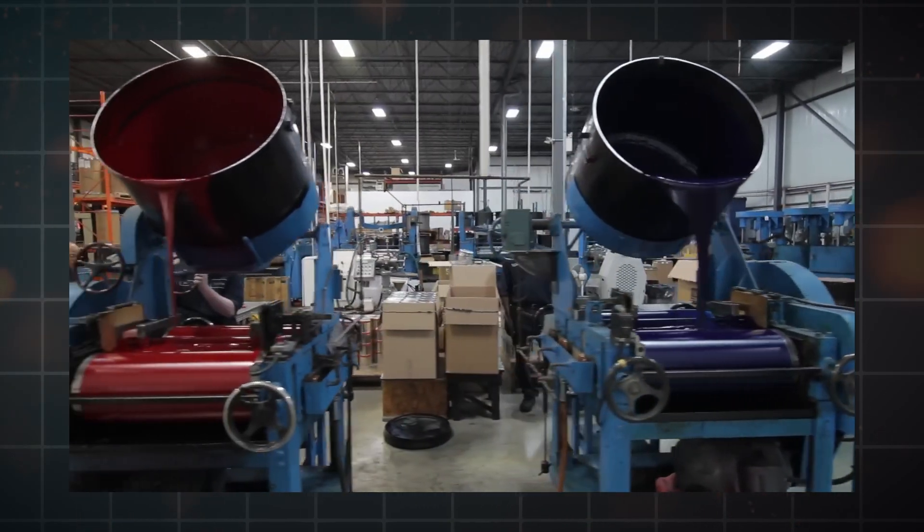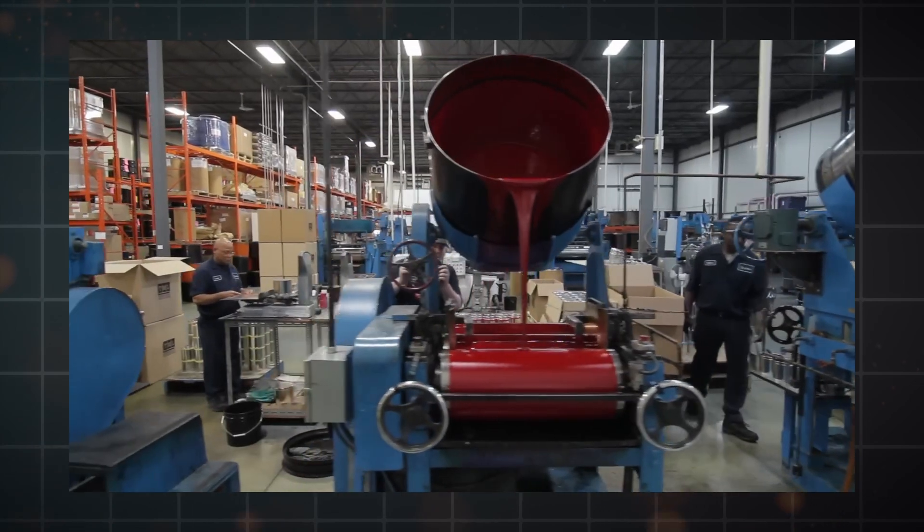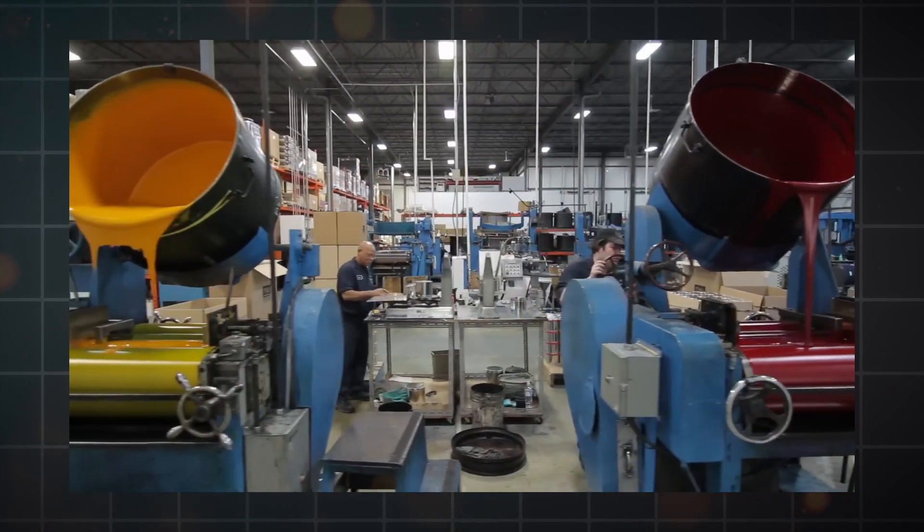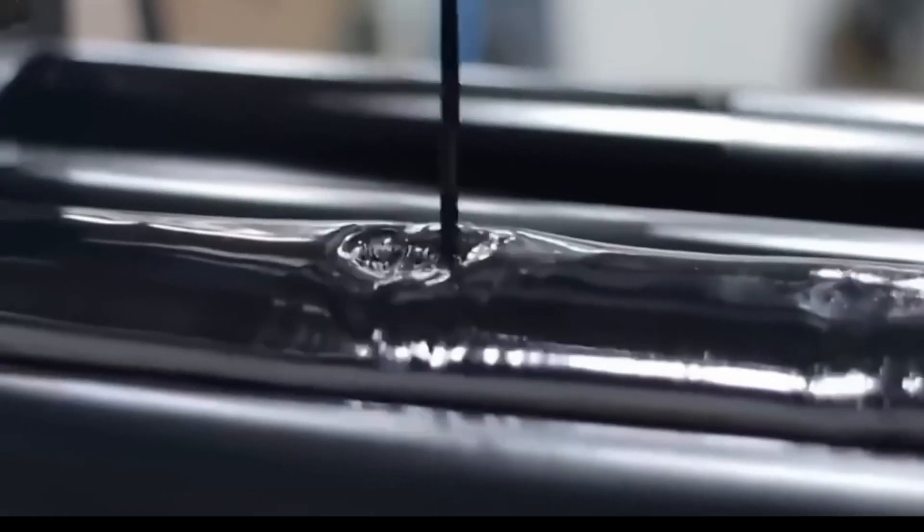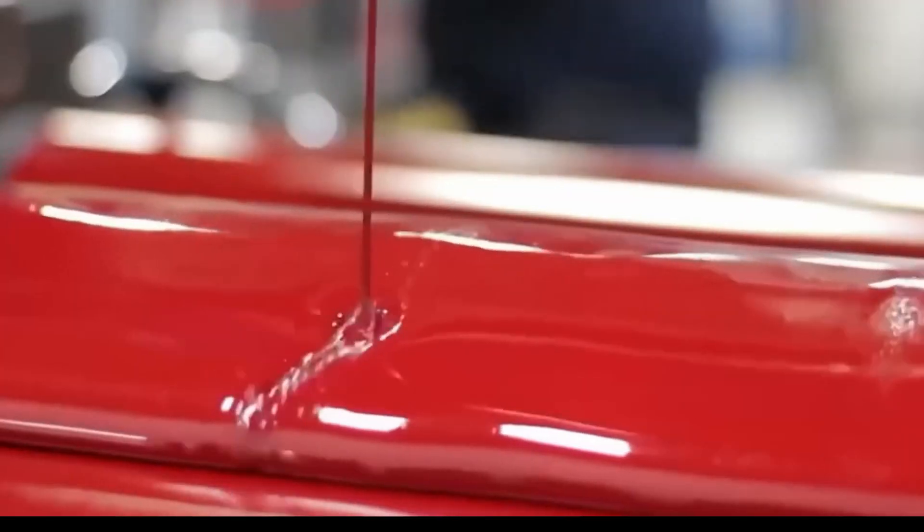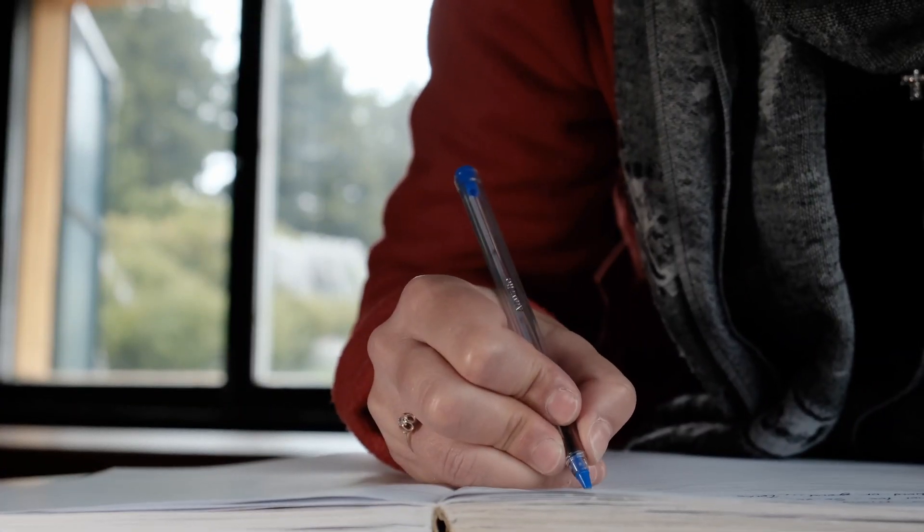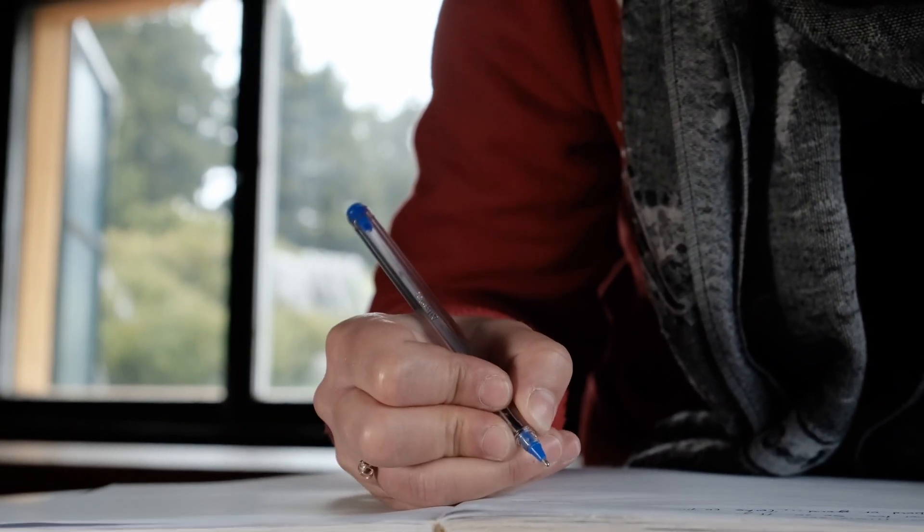In order to make the perfect ink, people mix different color dyes with special liquids that help the ink move easily, as well as some secret ingredients that make sure everything works just right. These things make sure that the ink spreads out evenly and dries quickly, so it doesn't smudge on the paper.